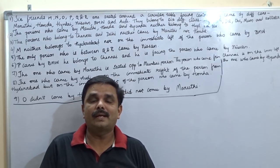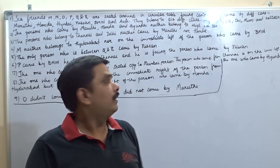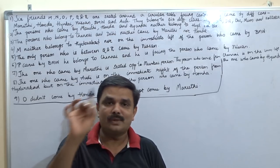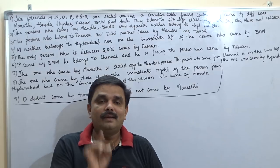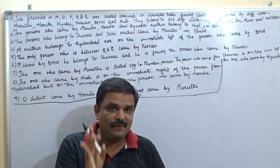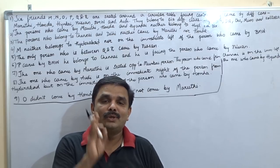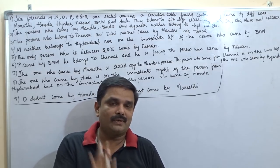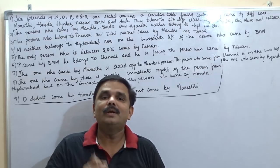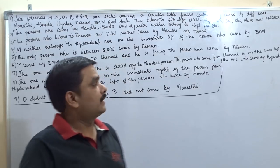Good evening. Today I am going to discuss another seating arrangement problem for you. This question is very important. Many parameters are given: six persons are seated around a circular table, they came from different cities and by different vehicles — six different cities, six different vehicles, all facing the centre. Let us understand the question.